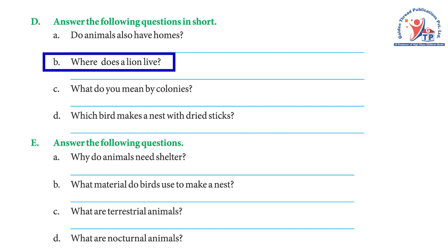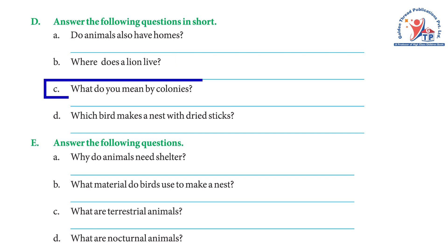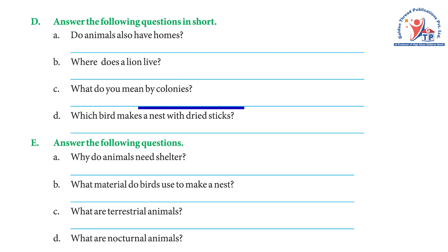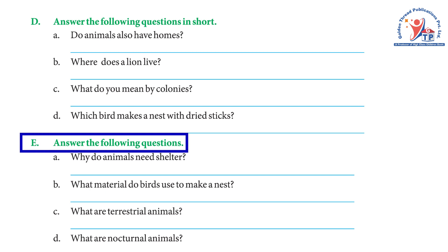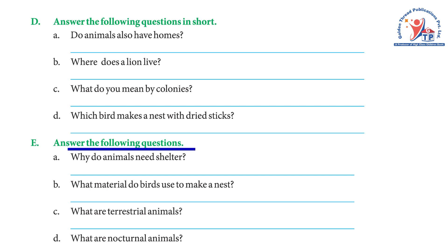(b) Where does a lion live? — A lion lives in a den. (c) What do you mean by colonies? — Some insects live in large groups known as colonies. (d) Which bird makes a nest with dried sticks? — The weaver bird uses dried strips of palm leaves to make a nest.